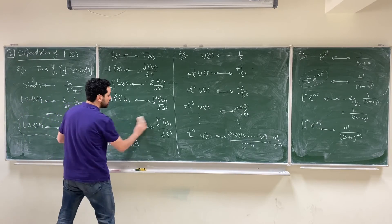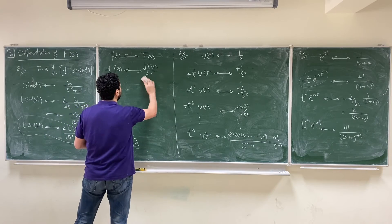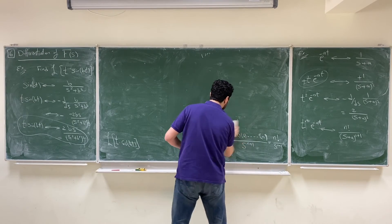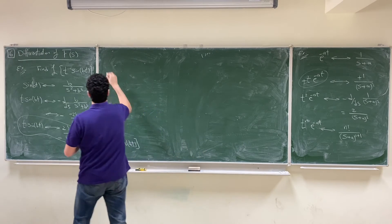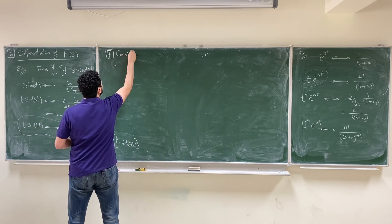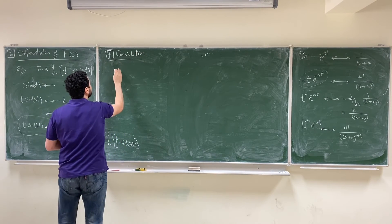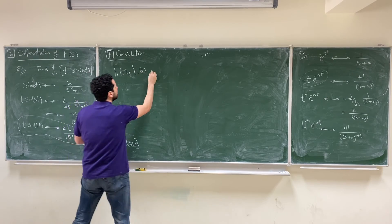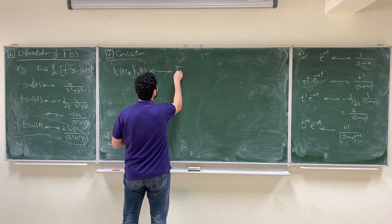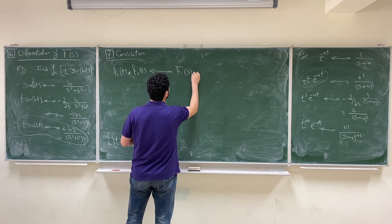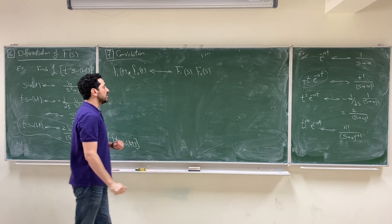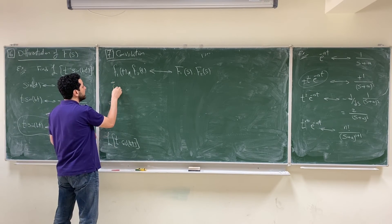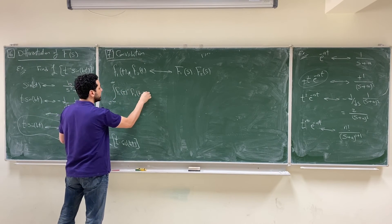The next property is the convolution property — property number 7. We will mention it without solving examples here; examples will appear later when we talk about systems. It states that the convolution of two functions in the time domain has a Laplace transform equal to the multiplication of their individual Laplace transforms.